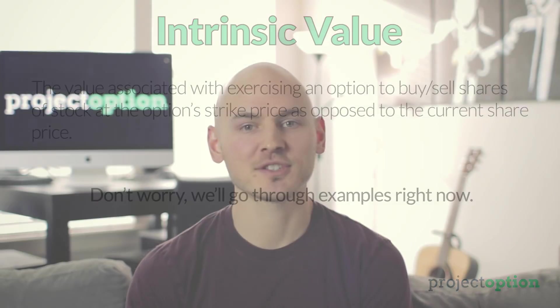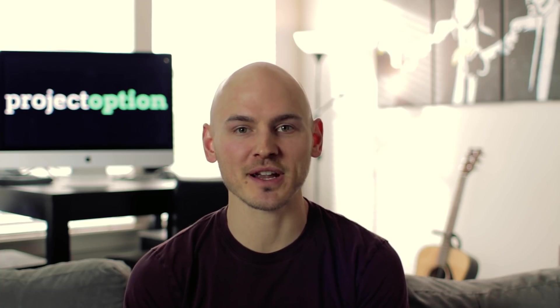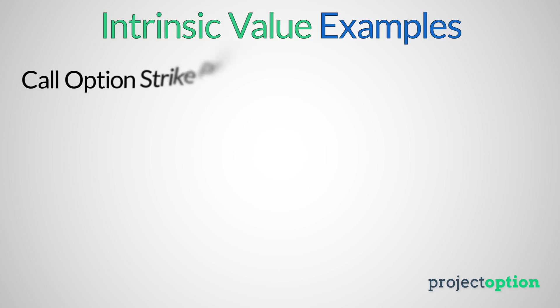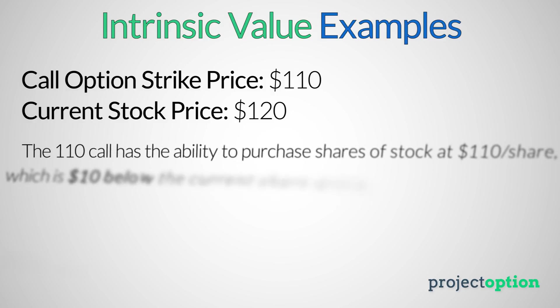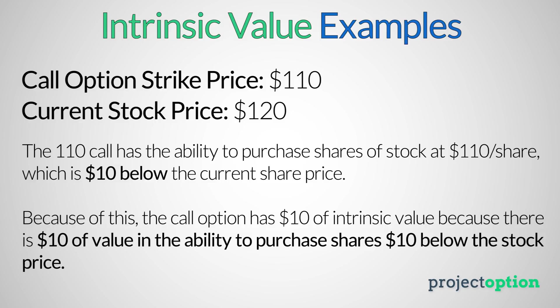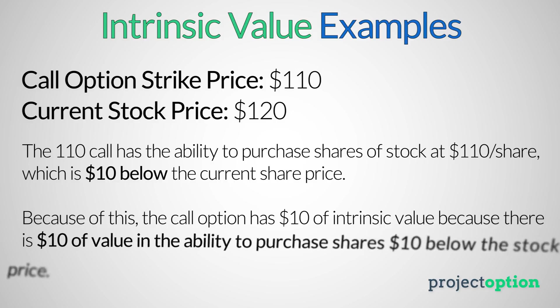Call options have the ability to purchase shares of stock at the call's strike price, while put options have the ability to sell shares of stock at the put's strike price. If we're looking at a call option with a strike price of $110 and that stock is trading for $120, that $110 call option has $10 of intrinsic value because it can purchase shares of stock $10 below the current market price.